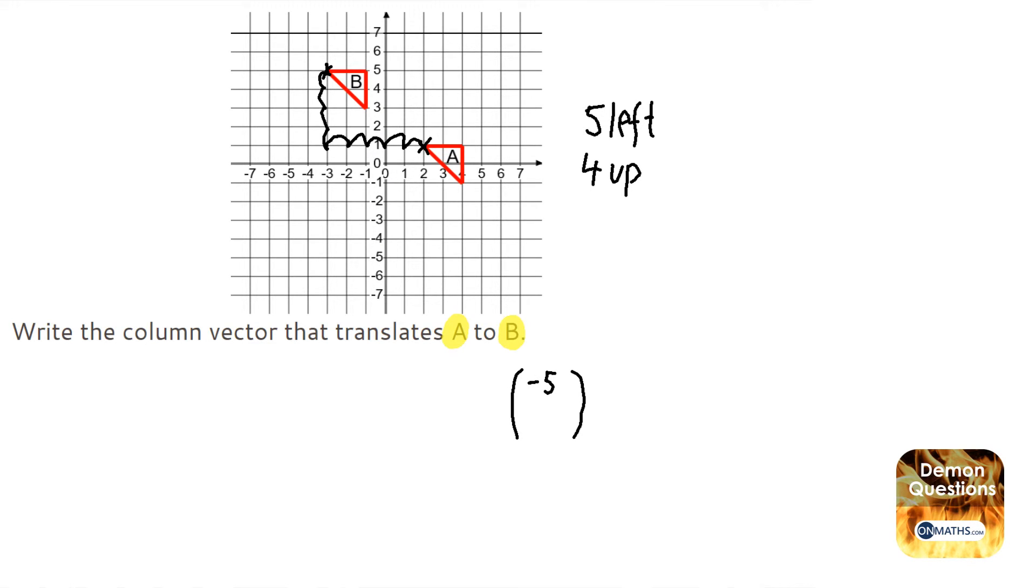So if it's positive, it's right. If it's negative, it's left. The one at the bottom says how far up we went. Well, we went 4 up. If it was negative, it would be going down.